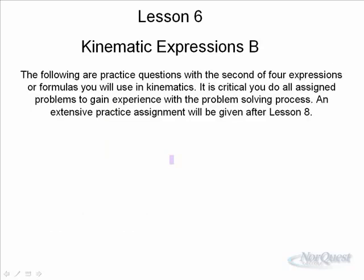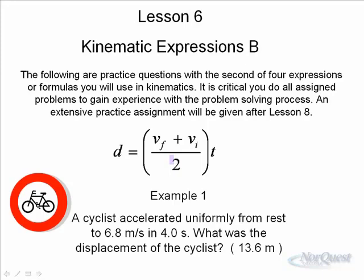The following are practice questions with the second of the four expressions, d is equal to vf plus vi over 2 times t. A cyclist accelerates uniformly from rest to 6.8 m/s in 4.0 s. What was the displacement of the cyclist? So, how do we figure out the displacement? Well, as you can see, we've got initial velocity right here. We've got final velocity right here, and this is what some of my students actually do. They take a highlighter, and as they're reading a question, they highlight the important information. So there's a strategy.